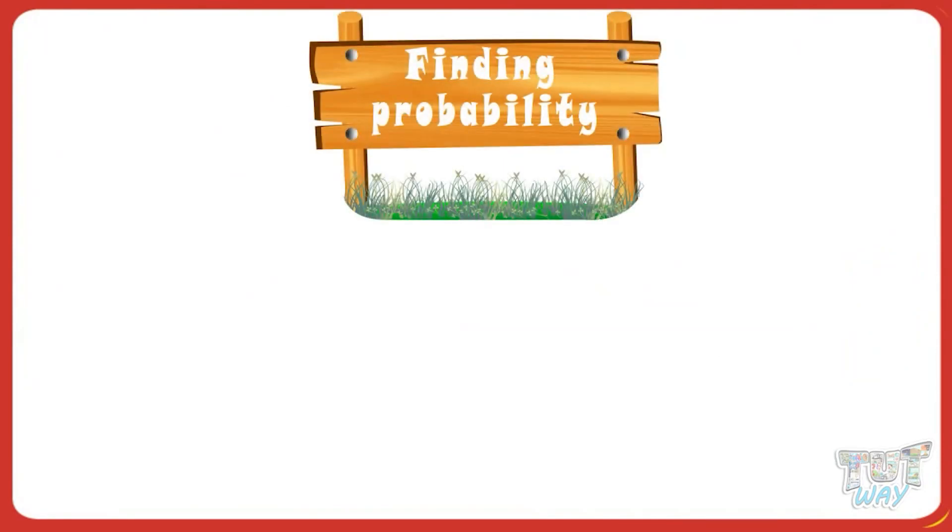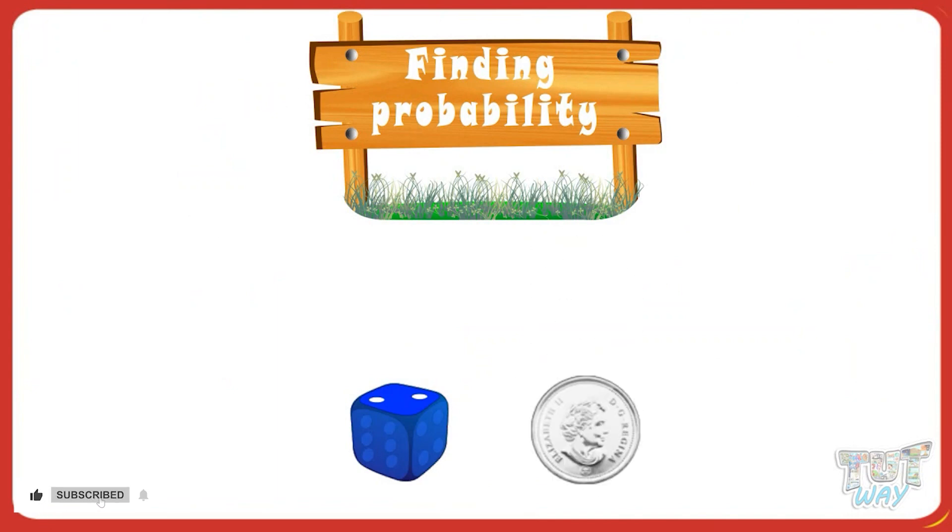Probabilities of various outcomes when we toss a single die or coin. Now let's learn how to find probabilities of something else.